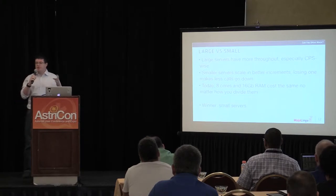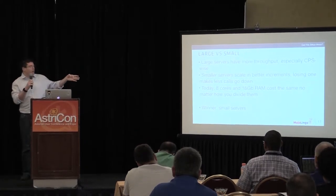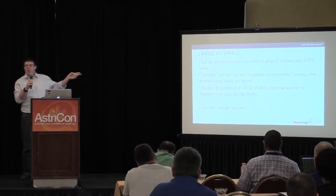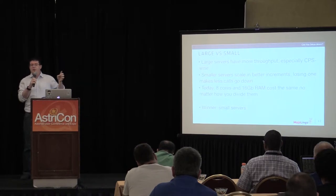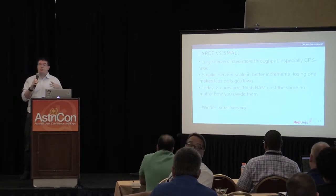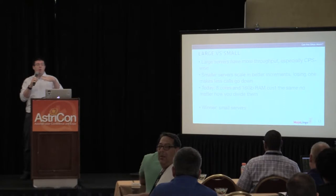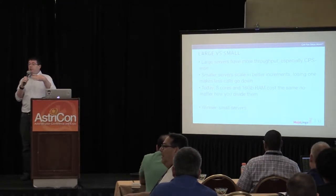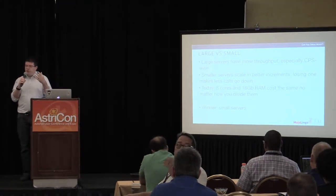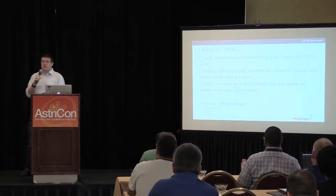We spin up a lot of nodes — the 8 cores, 16 GB RAM example I'm giving is just an example. Four two-core machines cost the same as one eight-core machine. Doing it with VMs allows autoscaling in real time, which is important because dialing is done in waves — weekends see roughly double the traffic of weekdays. I advise going with small servers.